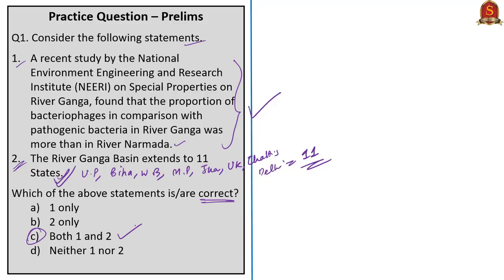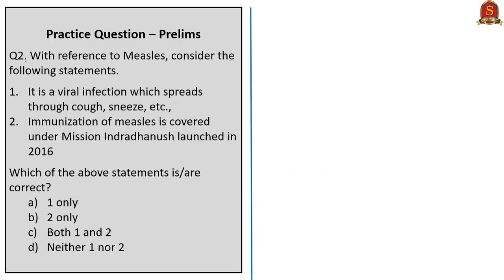The next question: with reference to measles, consider the following statements. Statement one: it is a viral infection which spreads through cough, sneeze, etc. Statement two: immunization of measles is covered under Mission Indradhanush launched in 2016. Statement one is correct as measles is an airborne viral disease. Statement two is partially correct — measles is covered under Indradhanush, however the mission was launched in 2014, not 2016. So the second statement is wrong, and the correct option is Option A: one only.